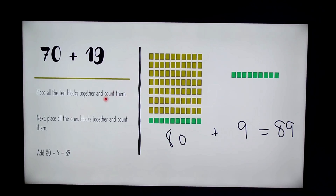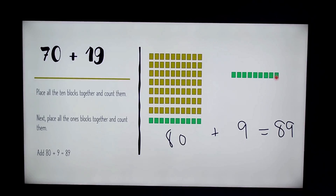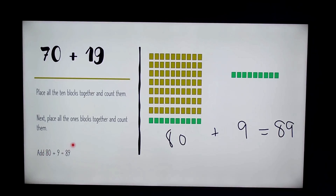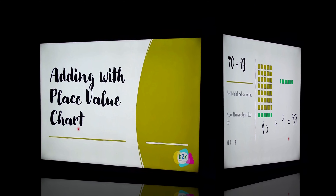Next we place all the 10-blocks together and count them — we got 80 total. Then we place all the 1-blocks together and count them — we got nine blocks. Then we add 80 plus 9, which equals 89.